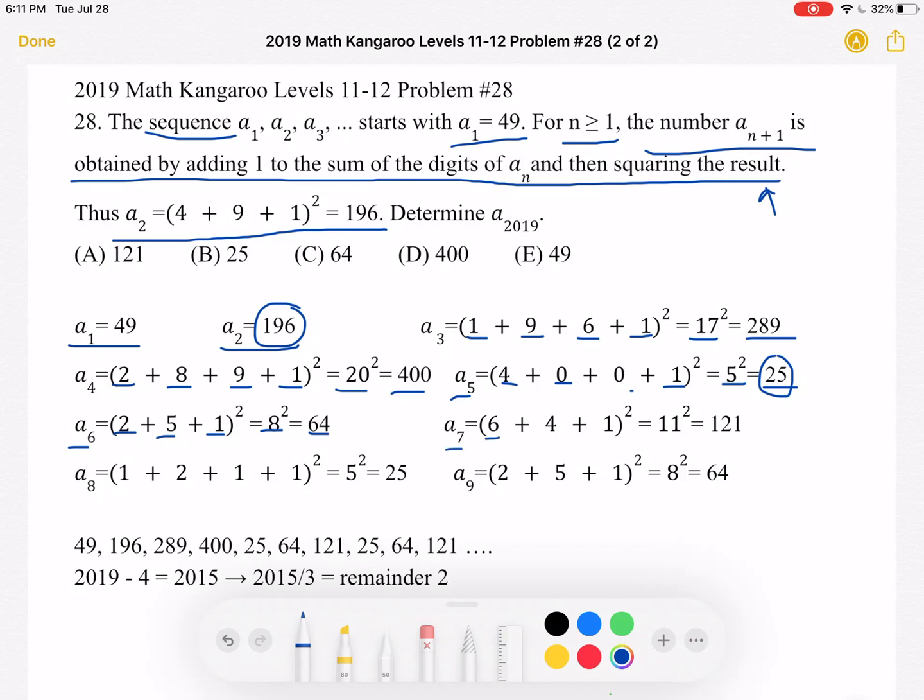A7 is 6 plus 4 plus 1 squared, which is 11 squared, which is 121.